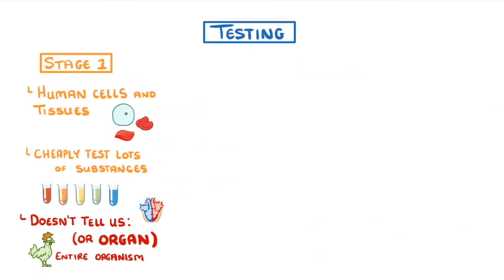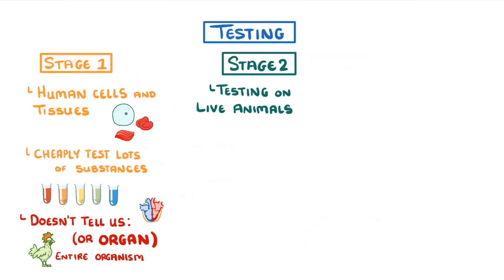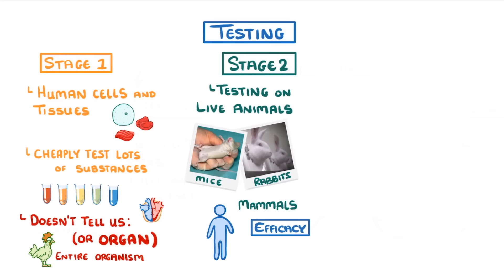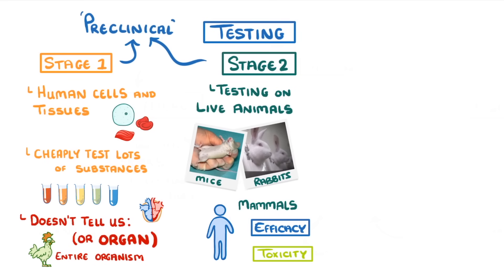If the substance looks promising, then we can move on to the next stage, which is testing on live animals. For example, in the UK, all drugs must be tested on two different types of live mammals, like mice and rabbits. As humans are also mammals, our bodies are going to be quite similar to theirs, and so this stage can give us a pretty good idea about the efficacy and toxicity of the substances. We can class these first two stages as preclinical, because they don't involve any humans.